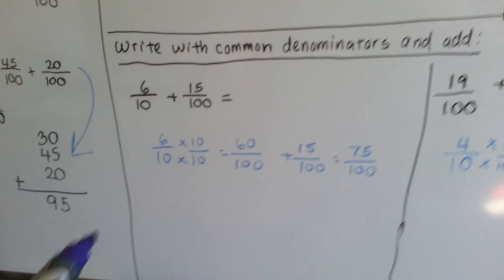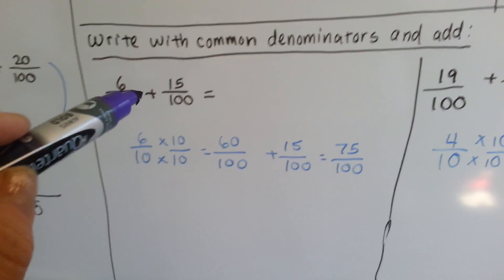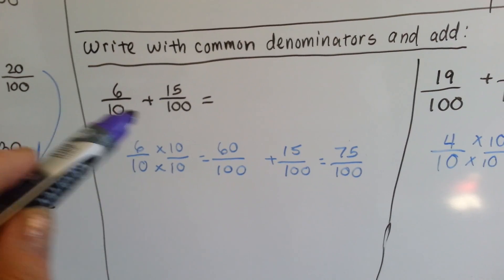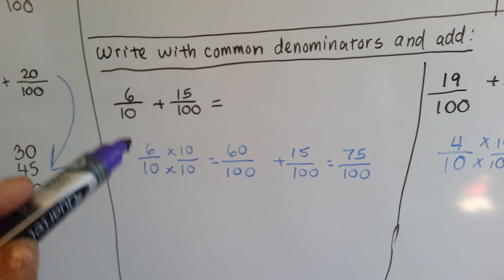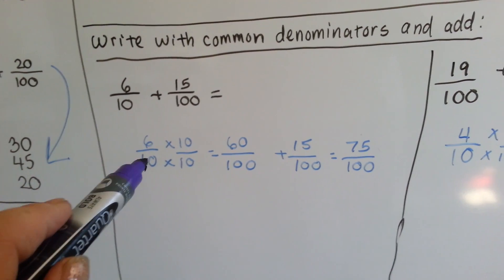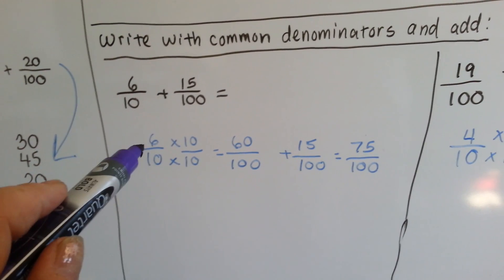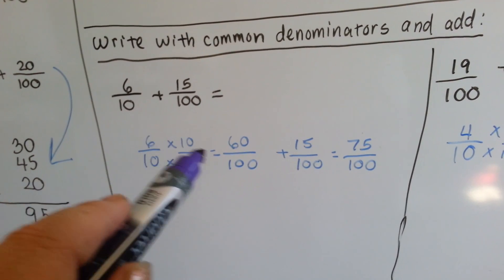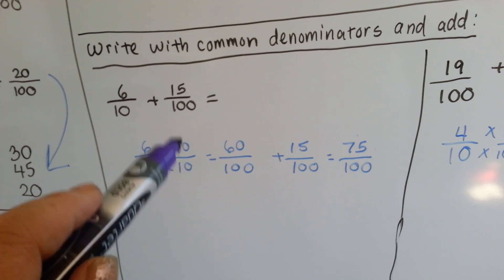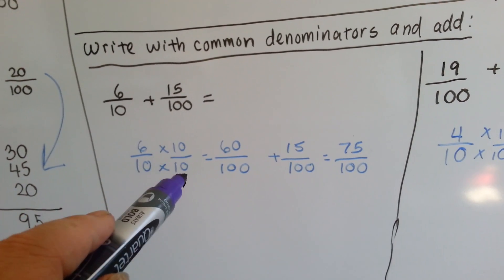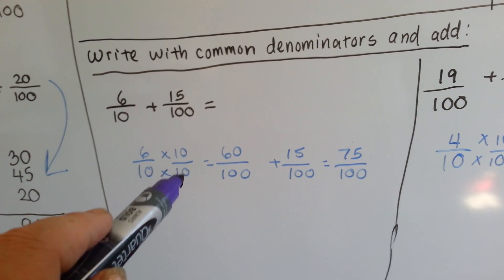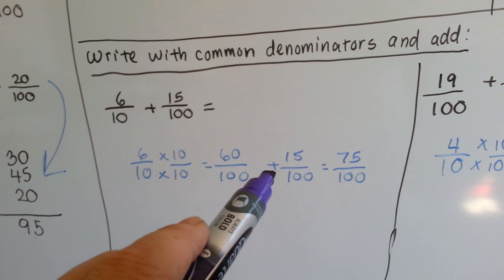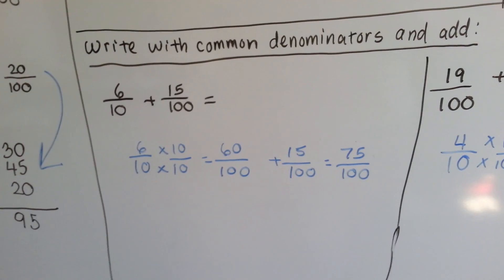We have six-tenths plus 15 one-hundredths. The tenths needs to become one-hundredths for the denominators to be common. 10 needs to be multiplied by 10 to become 100, so the numerator wants to be multiplied by 10 and becomes 60. The numerator is always jealous of the denominator and wants to be multiplied by the same thing — just keep thinking that it gets jealous. So now we've got 60 one-hundredths plus 15 one-hundredths, and that gives us 75 one-hundredths.